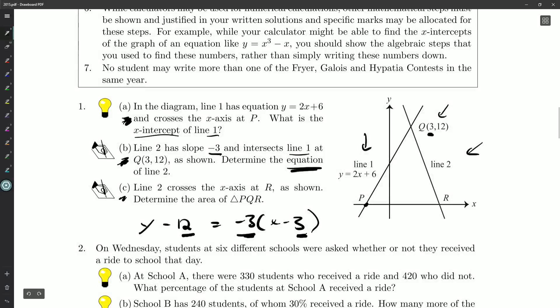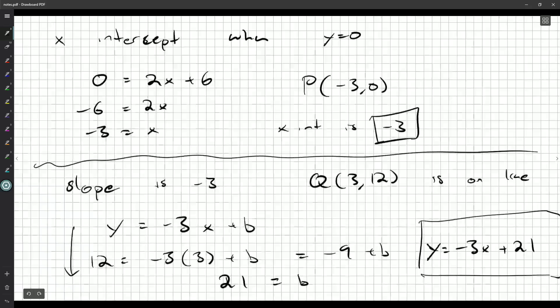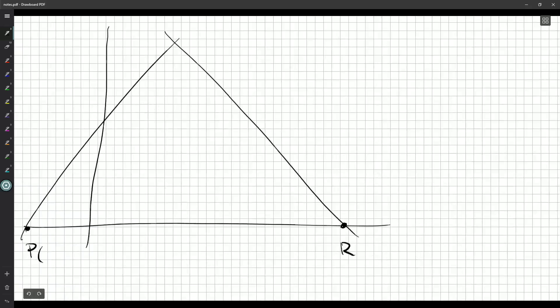Line two crosses the x-axis at R as shown. Determine the area of triangle PQR. So I can see the height is going to be 12 for this triangle. Now let's draw a copy of this in our notebook. So we have R here, P here. And we already know from earlier that the x-intercept is minus three. So P is at (-3, 0).